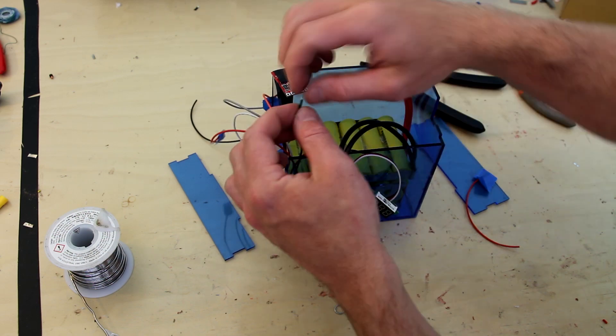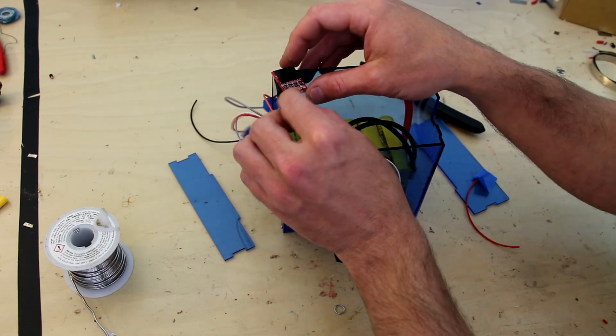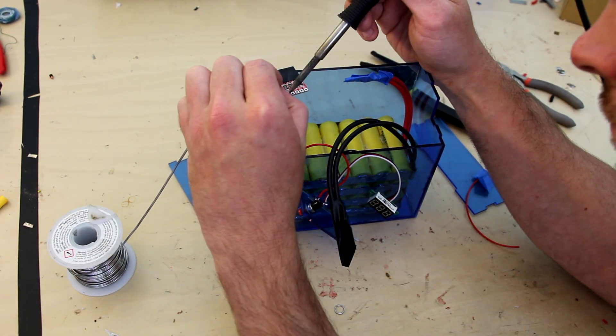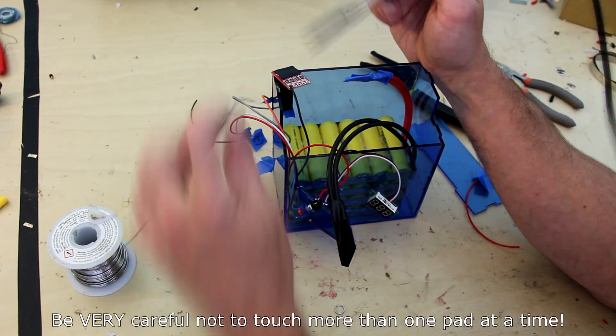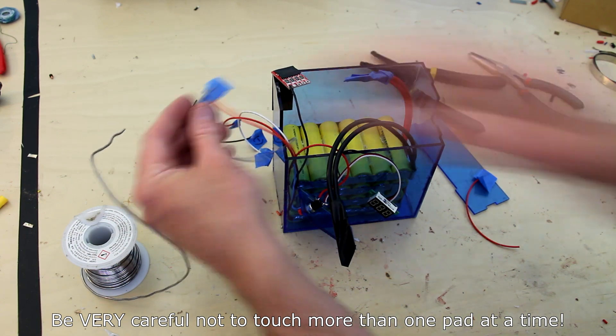Now I can go ahead and wire up my BMS system. To hold it in place I simply electrical taped it to the battery case itself so it wouldn't move when I'm soldering. Be very careful when soldering this together.